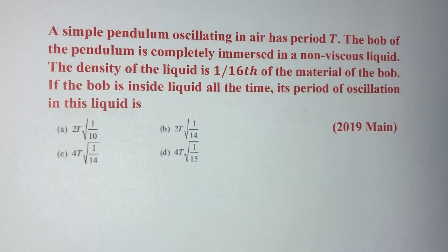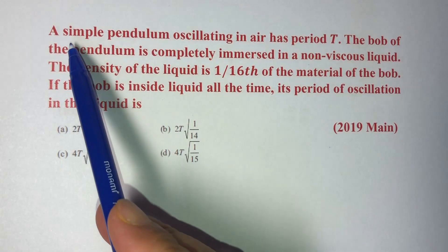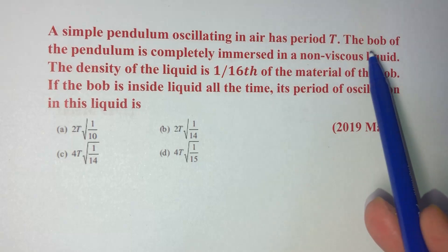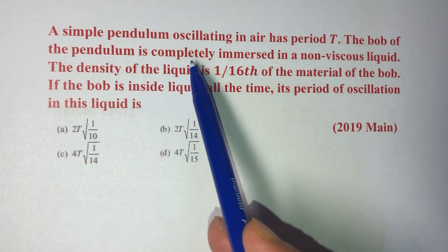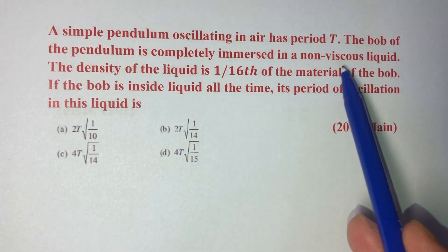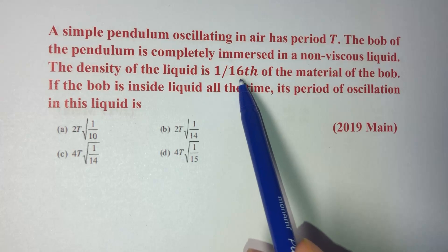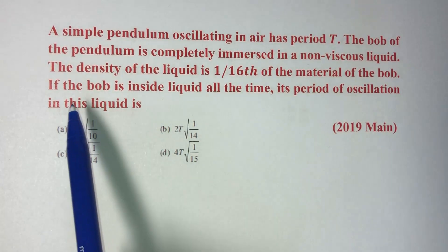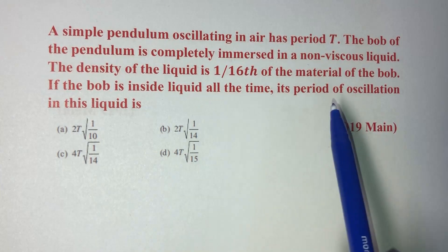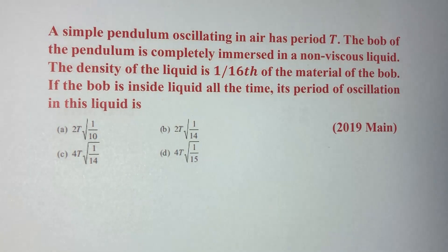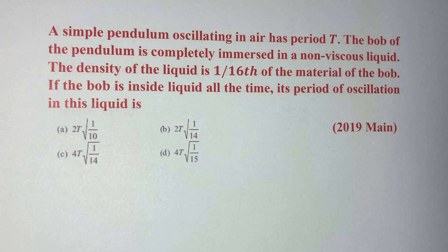Hello friends. In today's question, a simple pendulum oscillating in air has a period T. The bob of the pendulum is completely immersed in a non-viscous liquid. The density of the liquid is 1/16th of the material of the bob. If the bob is inside the liquid all the time, its period of oscillation in this liquid will be — so we have to find out what will be its period of oscillation.